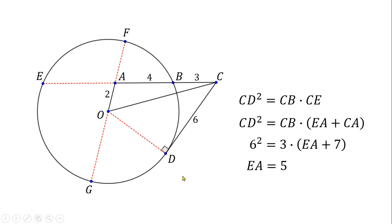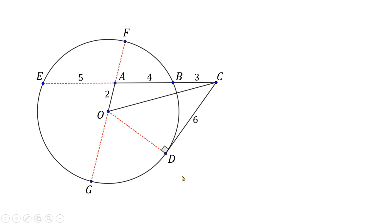Now, we know that EA is 5. Let us also find the radius GO, but first, let us denote it by R. Observe also that OF is another radius, and OF must be equal to R. And so, since OA is 2, AF can be denoted by R minus 2.